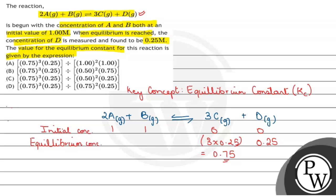अब जितने moles form होते हैं equilibrium पे products के, उतने हम minus कर देते हैं reactants में से, because उतने reactants convert हो गए हैं products में. तो initial concentration B का 1 था, 1 में से D का concentration जो simplest ratio में 1 mol है, तो इसको हम minus कर देंगे — it will be 1 minus 0.25, it will give 0.75. तो B का concentration equilibrium पे 0.75 है.